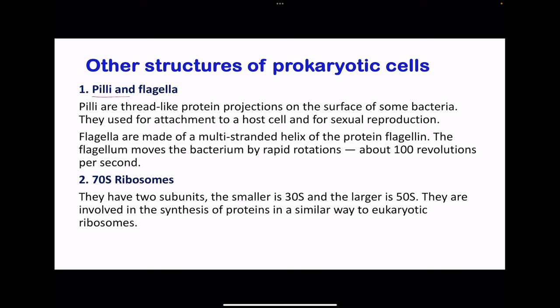Next, we go to other structures like the pili and the flagella. Pili are thread-like proteins found on the surface of bacteria, and sometimes they're used for attachment to the host or for sexual reproduction, meaning conjugation and exchange of genetic material, not actual sexual reproduction like in other organisms. The flagella are made up of a multi-stranded helix of protein called flagellin. These allow the bacterium to move because the flagellum is going to be rapidly rotated for faster movement.